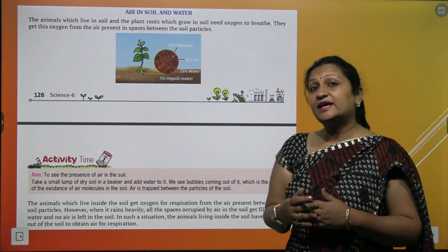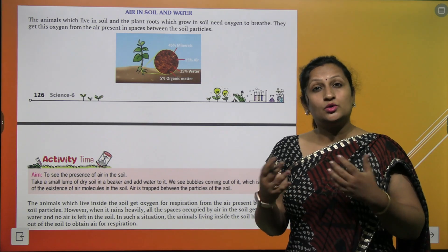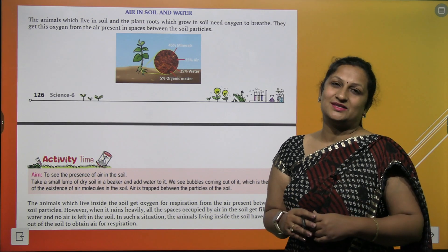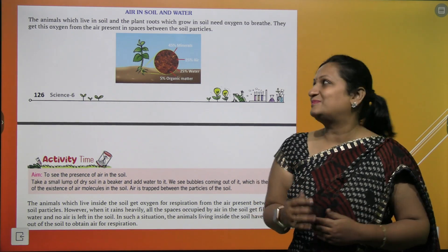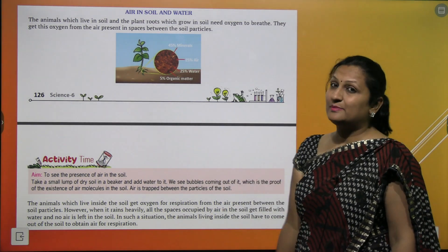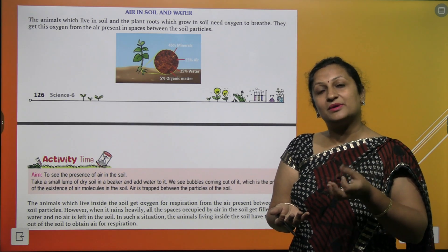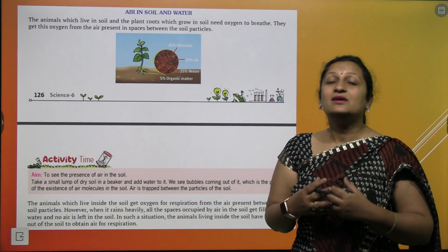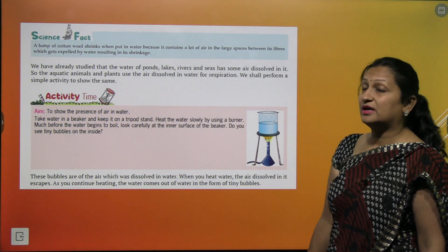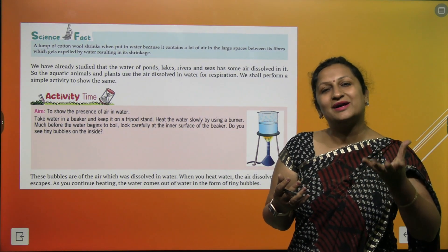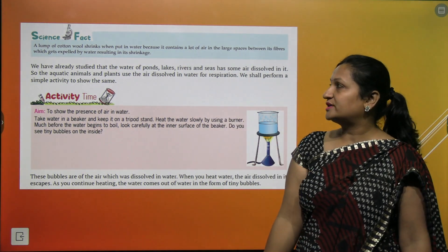Air in soil and water. Aapko pata hai air soil mein bhi present hai, water mein bhi. Soil mein bohot saare living organisms rehte hain, plants ki roots bhi present hain — unko bhi oxygen chahiye for breathing. Isi liye soil mein bhi air present hoti hai. Water mein bhi air present hoti hai taaki aquatic animals aur plants photosynthesis aur respiration perform kar sakein. To see the presence of air in soil: is activity mein hum thoda sa dry soil lenge aur usse water mein daalenge. Toh aapko bubbles aate dikhenge — yeh bubbles show karte hain ke soil mein air present thi. A lump of cotton wool shrinks when put in water because it contains a lot of air in large spaces between its fibers, which get displaced by the water.